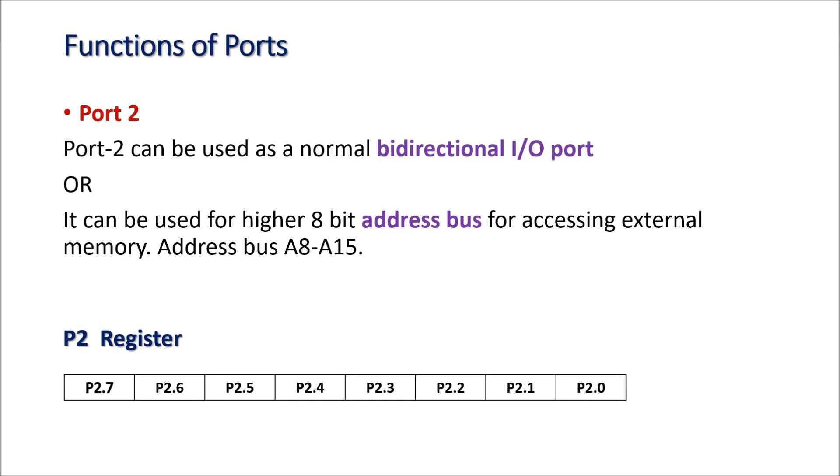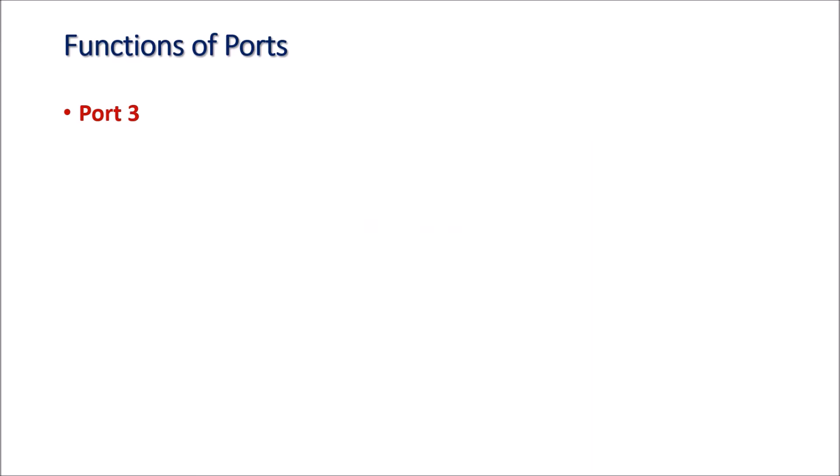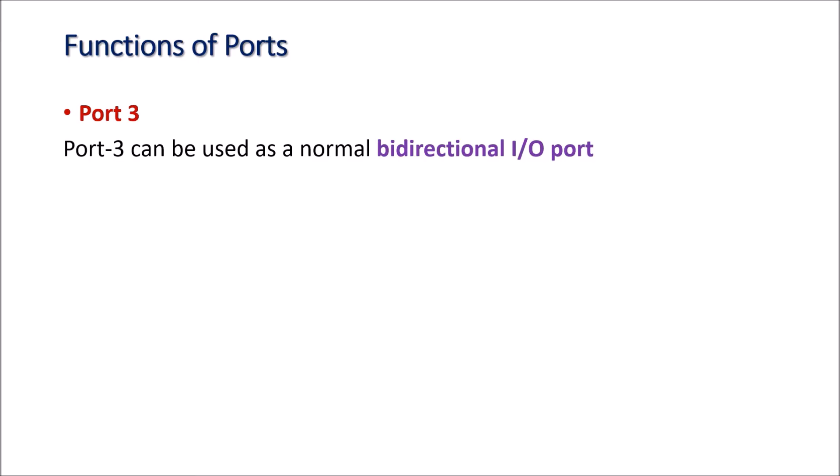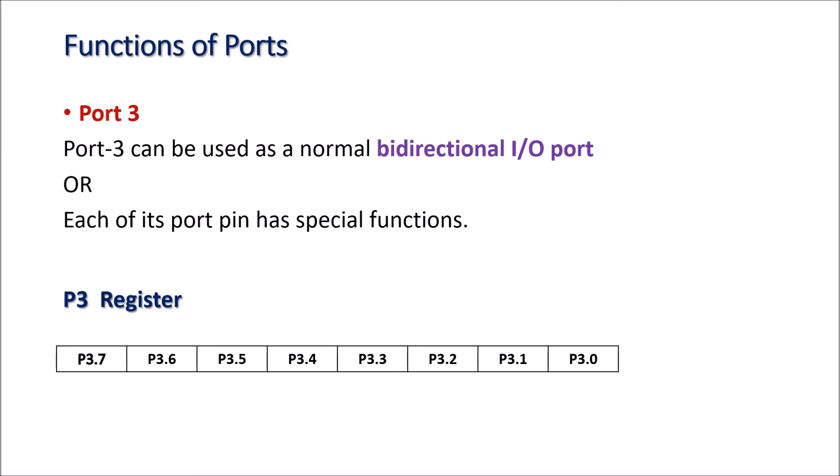Port 2 is a bit and byte addressable register. Port 3 is one of the most important ports of the 8051. It can be used as a normal bidirectional input-output port, or each pin of this port has some special function that we will discuss. The register associated with this port is P3, and individual pins can be accessed using names P3.0, P3.1, P3.2, up to P3.7.